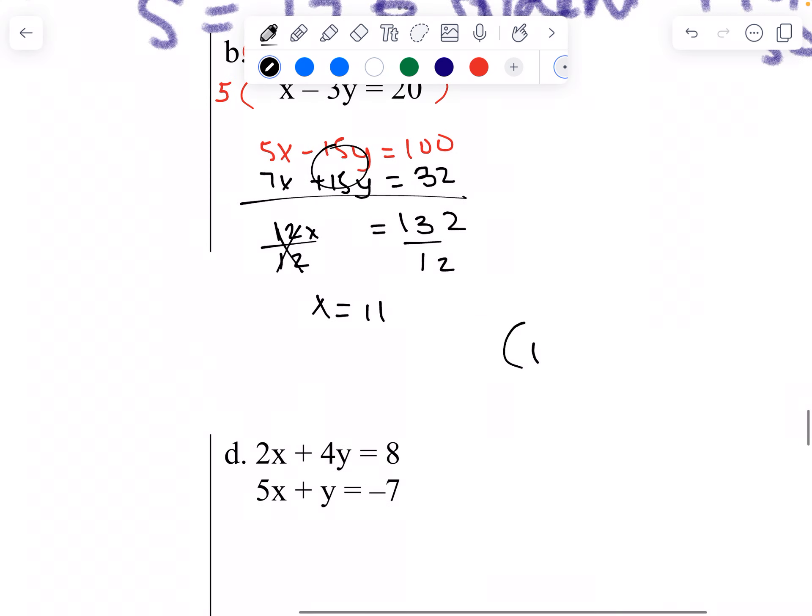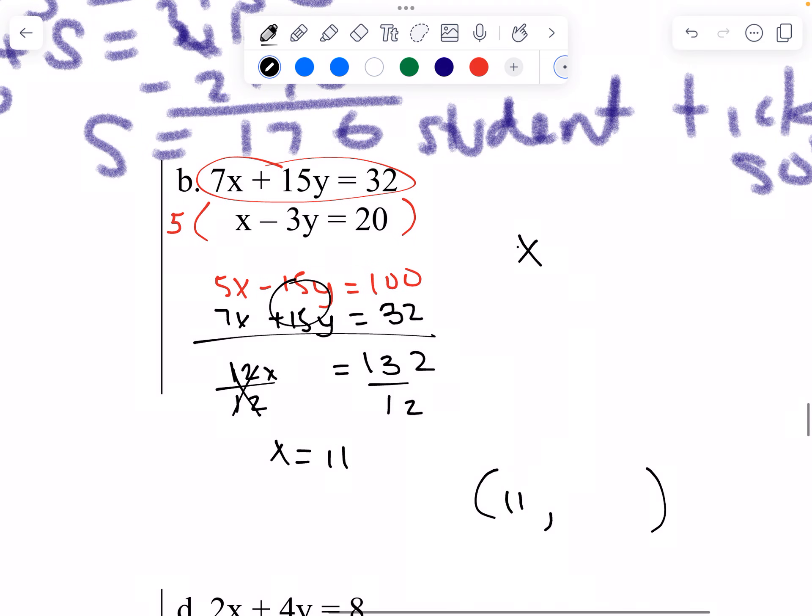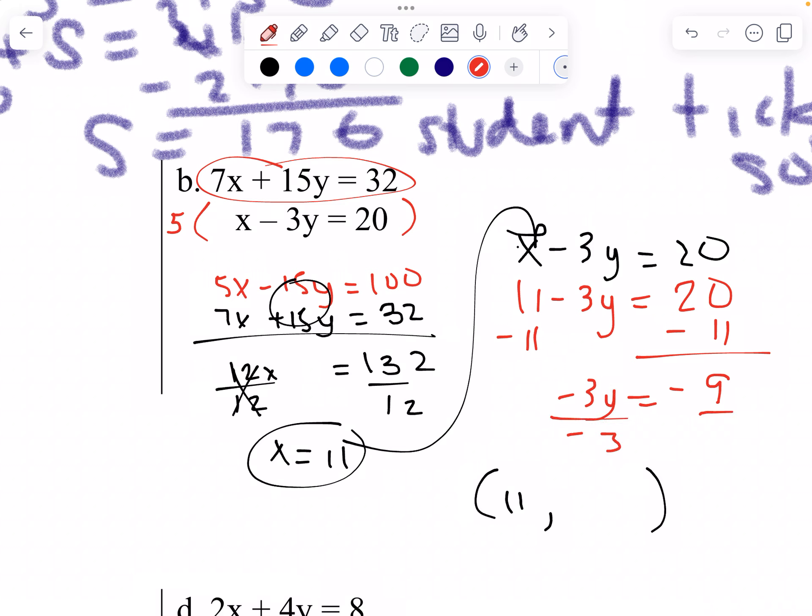So X is 11. We need to find Y. I'm taking the x minus 3y equals to 20. Put 11 in here. Minus 11. Divide by negative 3. Y equals to a positive 3.